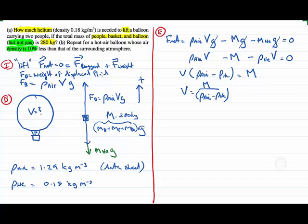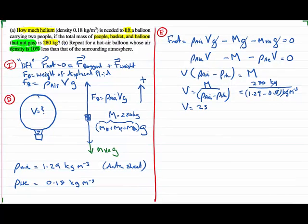We've got a symbolic equation, we can put in our values. 280 kilograms on the top, divide by the density of air, 1.29, minus the density of helium, 0.18. The units are kilograms per meter cubed. The kilograms cancel, we end up with a volume in meters cubed. If we plug that into our calculator, we find that the volume is equal to 252 meters cubed.